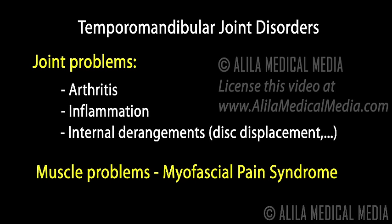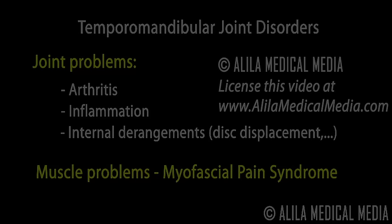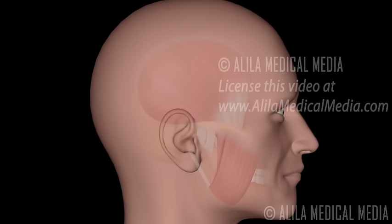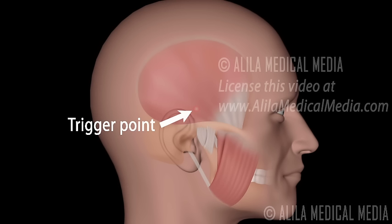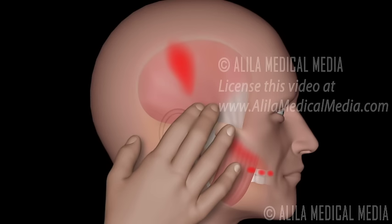When the problem is in the muscles, the condition is called myofascial pain syndrome. Myofascial pain syndrome is very common and can occur in patients with a normal temporomandibular joint. The syndrome is characterized by the presence of hyperirritable spots located in skeletal muscles called trigger points. A trigger point can be felt as a nodule of muscle with harder than normal consistency. Palpation of trigger points may elicit pain in a different location — this is called referred pain.